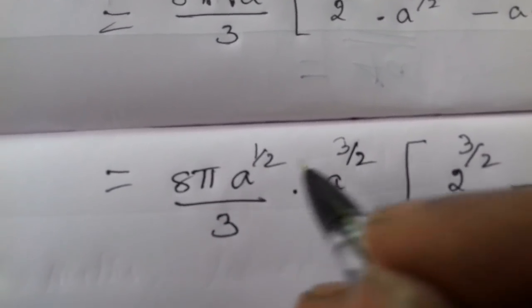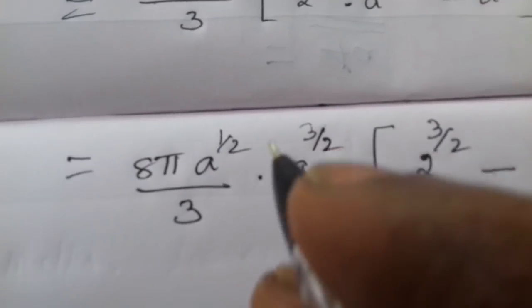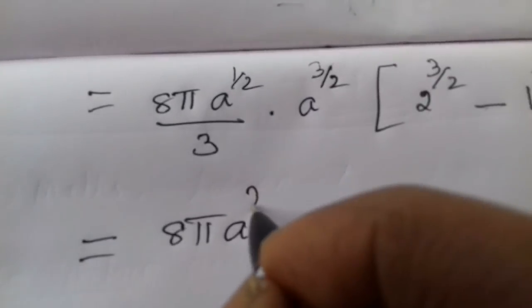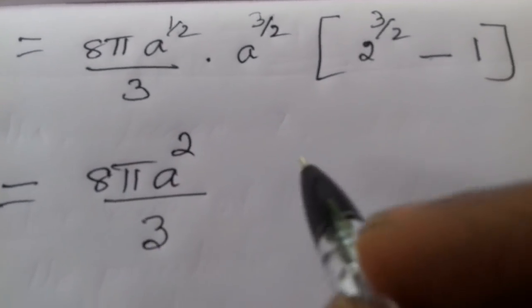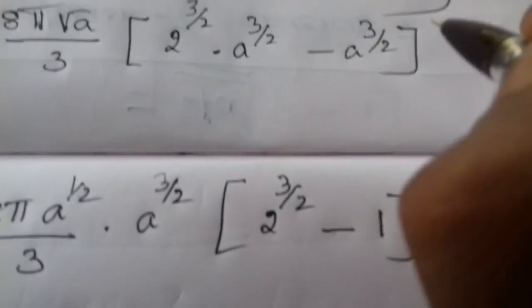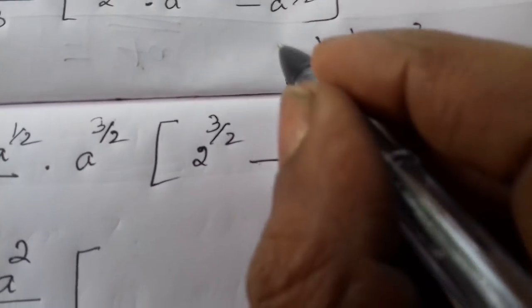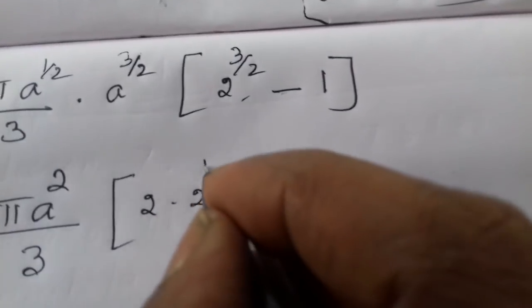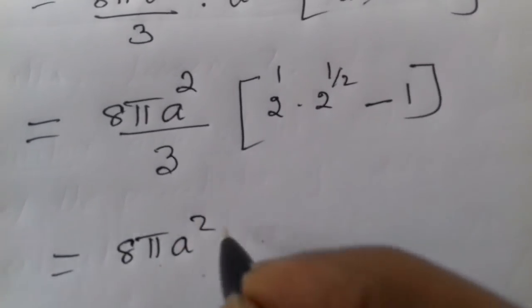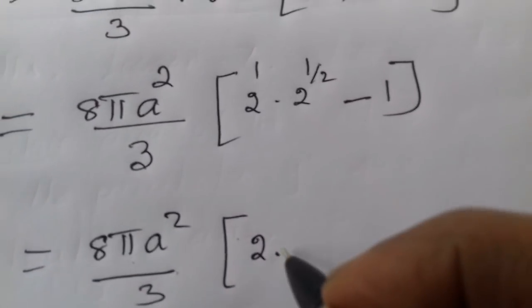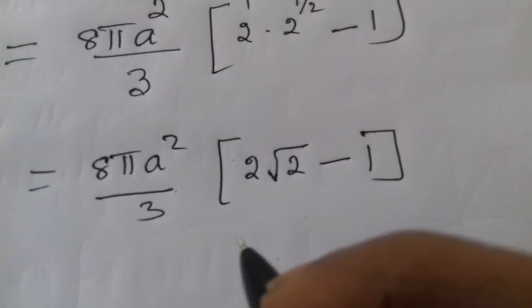Simplifying: (2a)^(3/2) = 2^(3/2) · a^(3/2) = 2√2 · a^(3/2). So we have a^(3/2)(2√2 - 1). Combining everything: A = 4π√a · (2/3) · a^(3/2)(2√2 - 1) = (8πa²/3)(2√2 - 1). The final answer is 2πa²/3 · (2·2^(1/2) - 1).